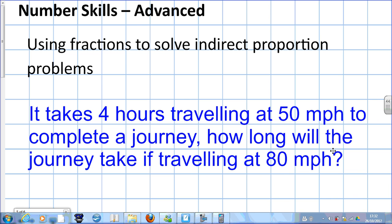How can we tell it's an indirect proportion problem as opposed to a direct proportion one? We have to ask ourselves this question. As one of the things goes up, does the other thing go up? Or if it goes down, does the other thing go down? If that's the case, then it's direct proportion.